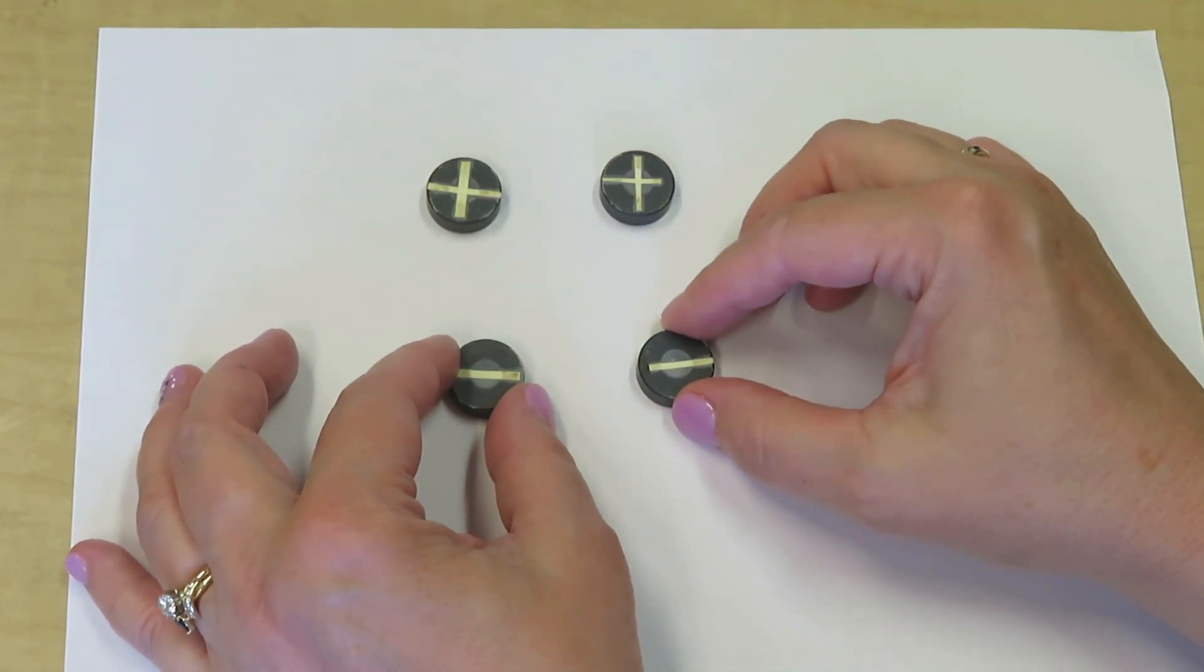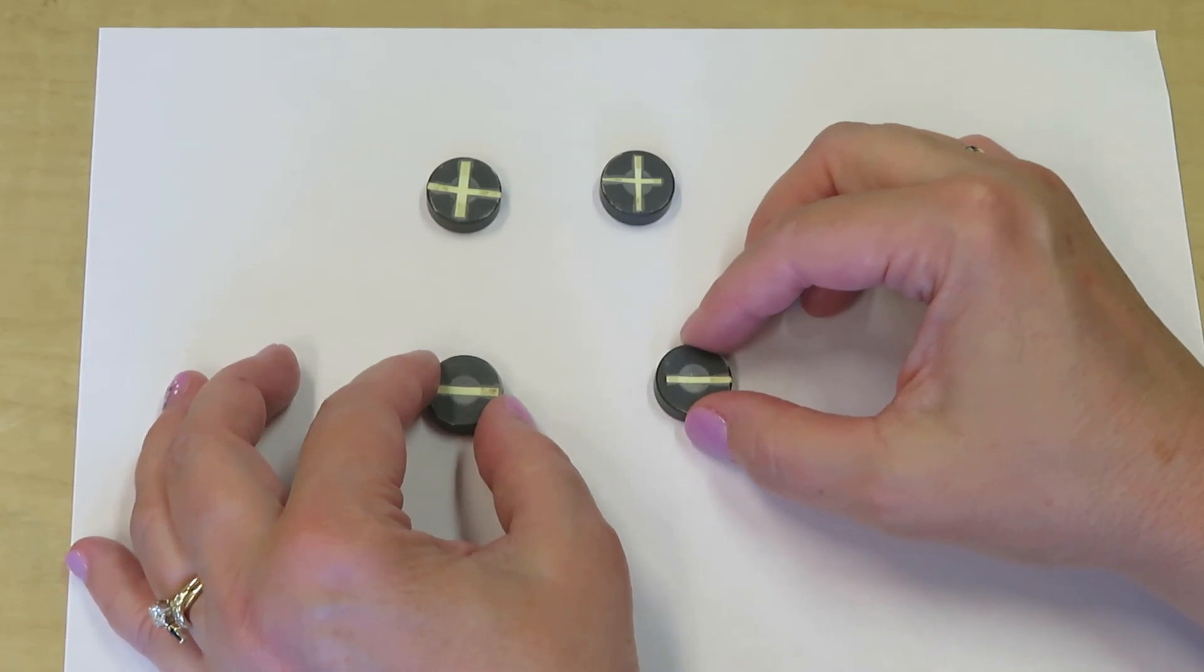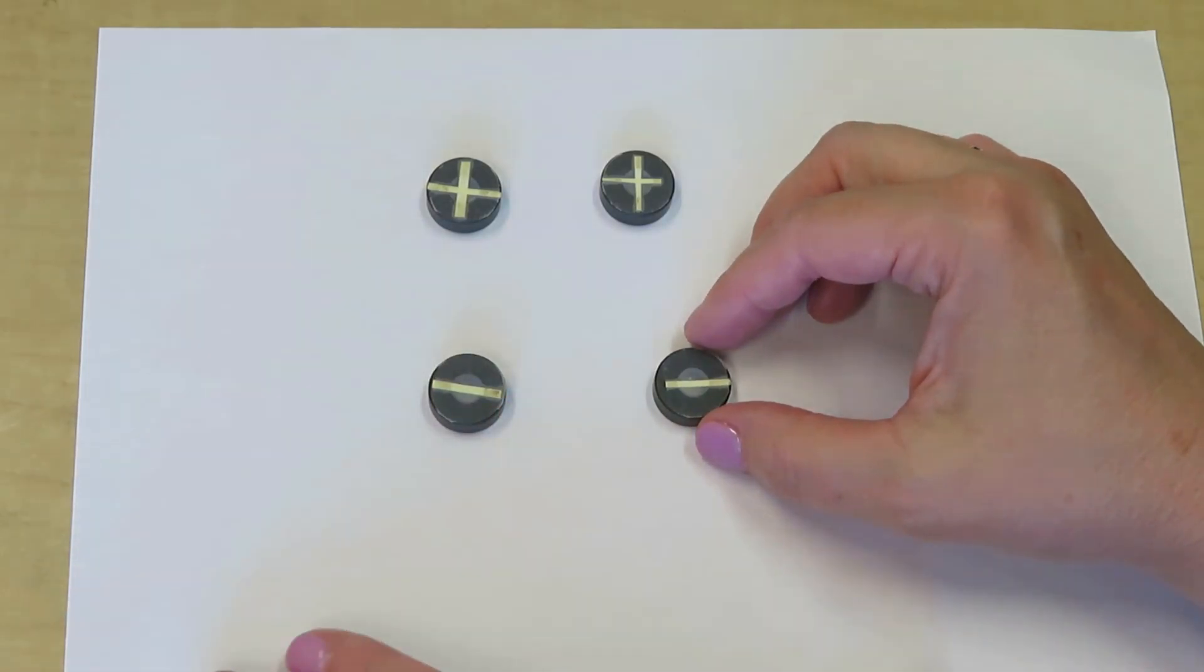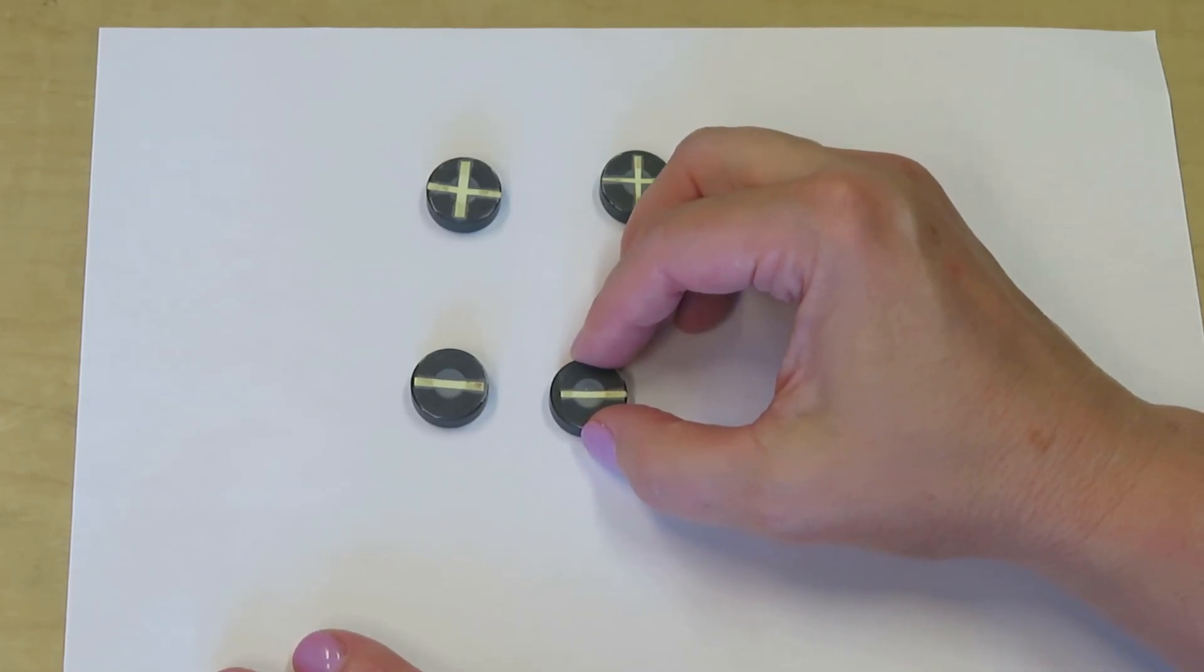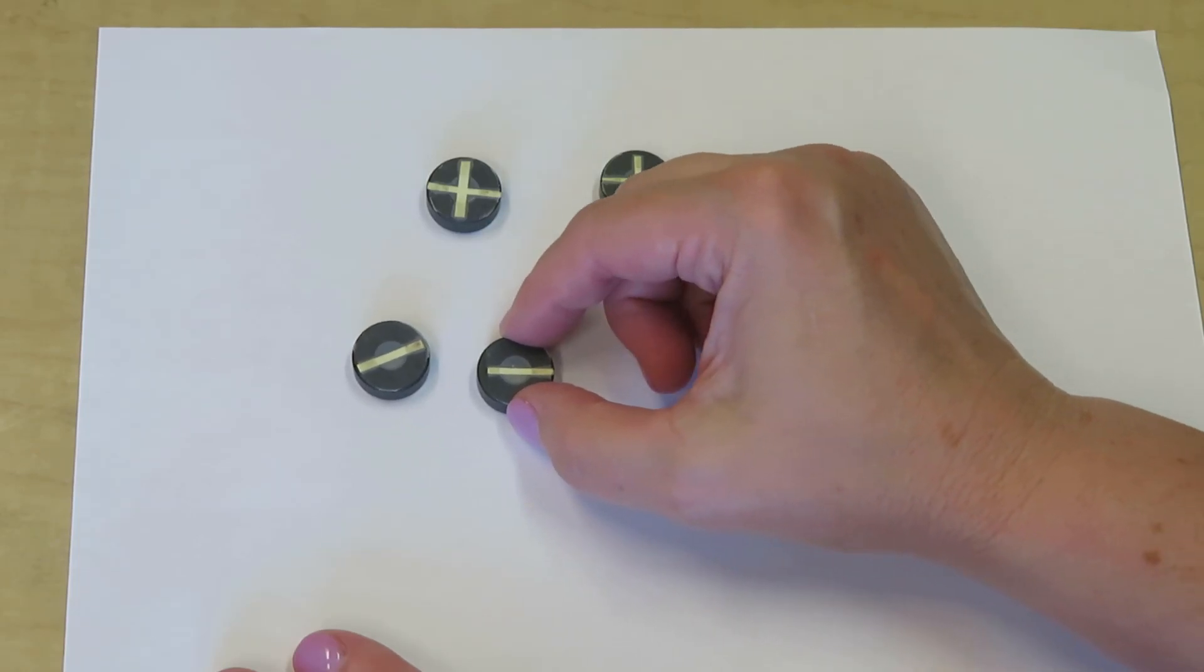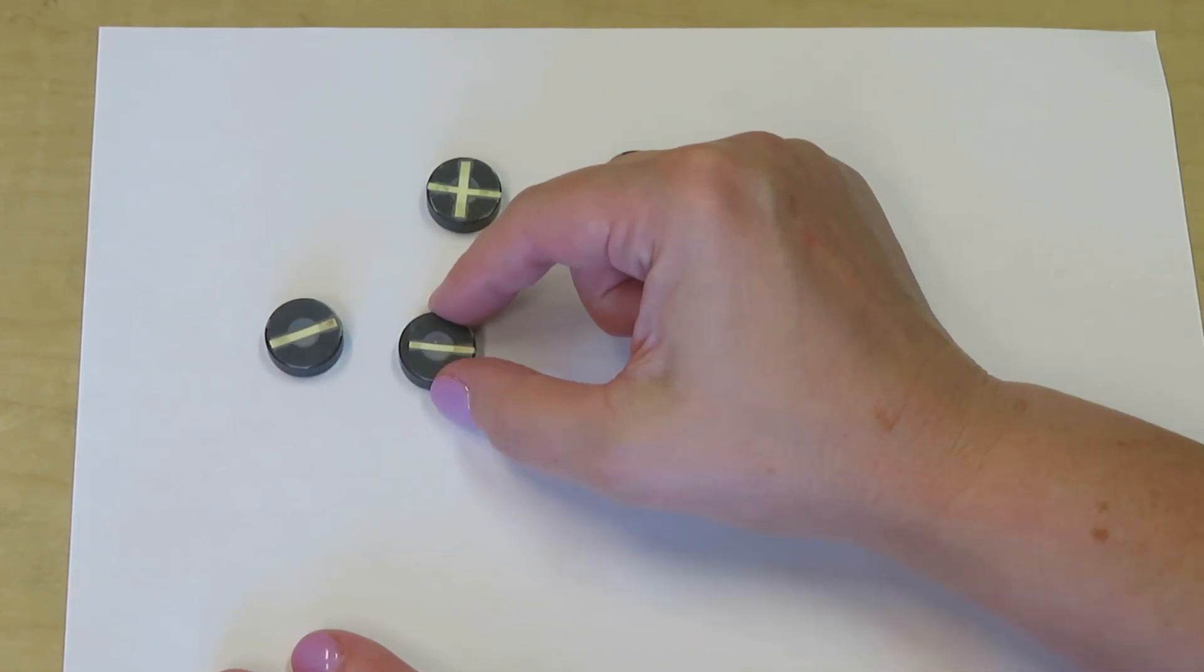So these two magnets here are going to represent protons. These two magnets here are going to represent electrons. Let's look at what happens as electrons approach one another from a far away distance. Do you notice how the electron is pushing the other electron away? We would call this repulsive.